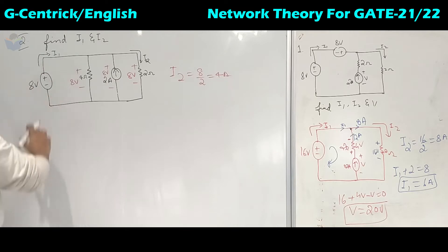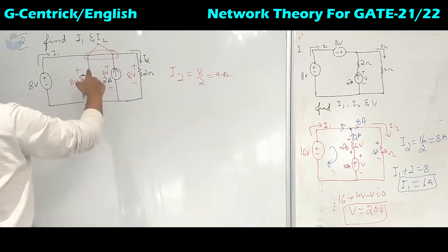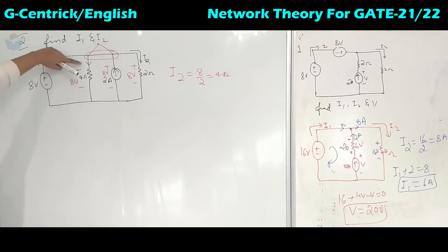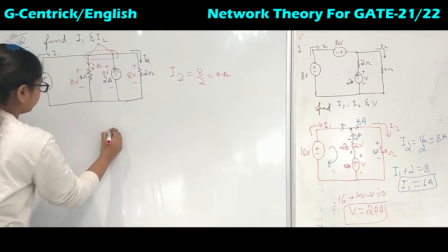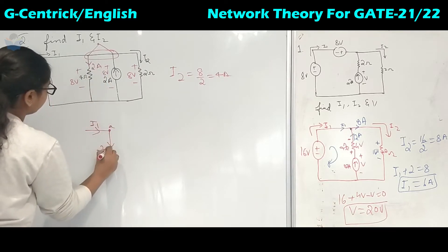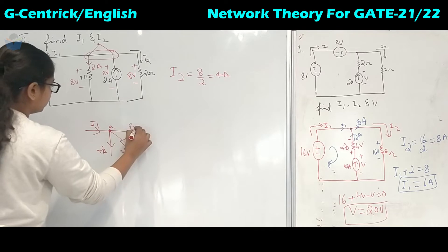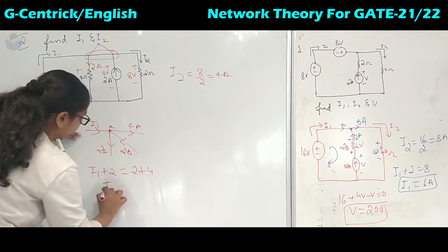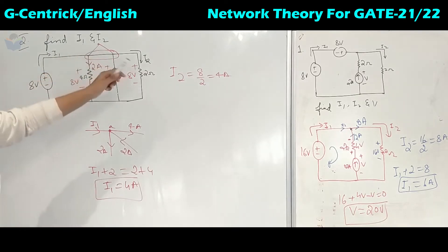We need to find I1. If you observe, both nodes have the same potential, so we can consider them as one node. We know the voltage and the resistor, so the current in the 4-ohm branch is 8 by 4 equals 2 amperes — entering at the positive terminal. Drawing node A: I1 is entering, 2 amperes is leaving, 2 amperes is entering, and 4 amperes (I2) is leaving. Applying KCL: I1 plus 2 entering equals leaving, so I1 equals 4 amperes.